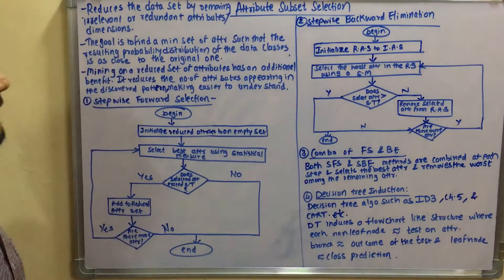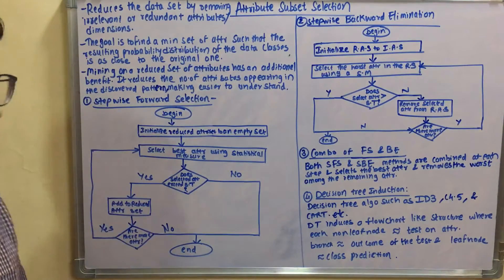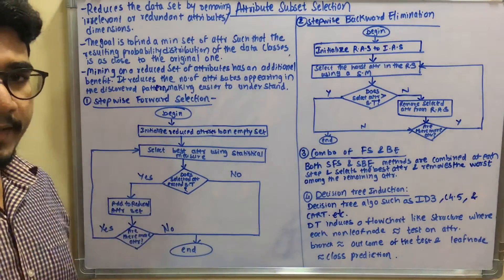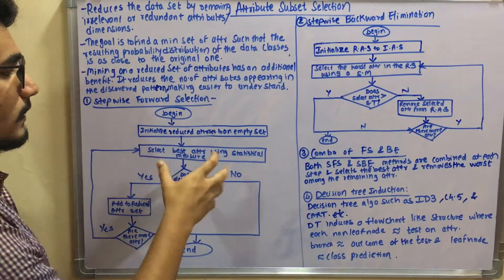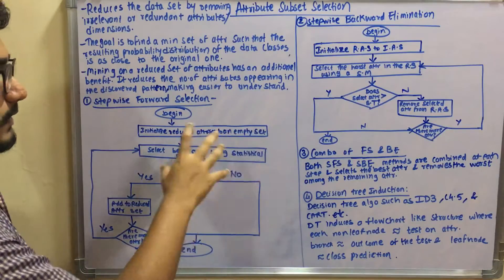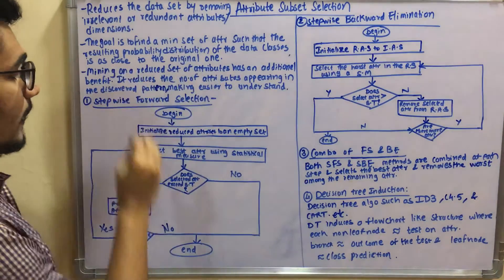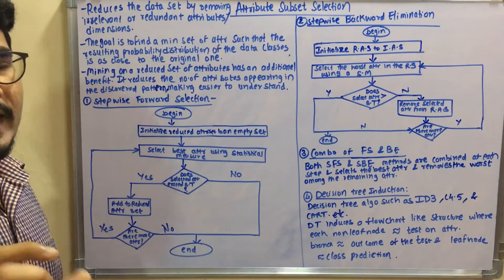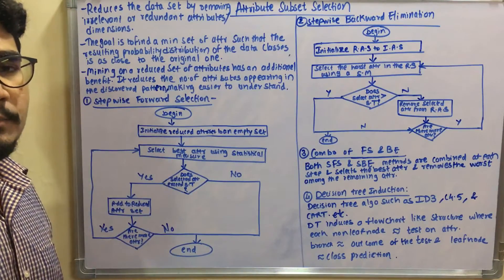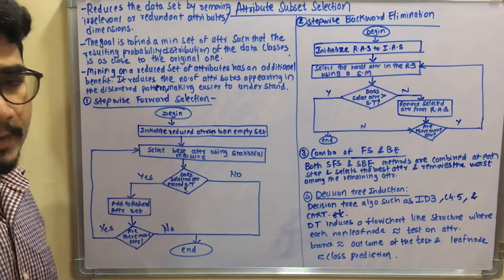For stepwise forward selection, I have considered a flowchart so it becomes easier to understand. You begin with all the data attributes you have. Then you initialize a reduced attribute set to an empty set - it's basically initialization. Then you select the best attribute from that using a statistical measure. You calculate some kind of mathematical measures and select the best attribute from that set.